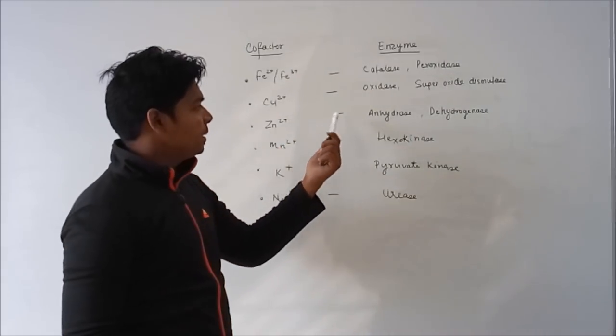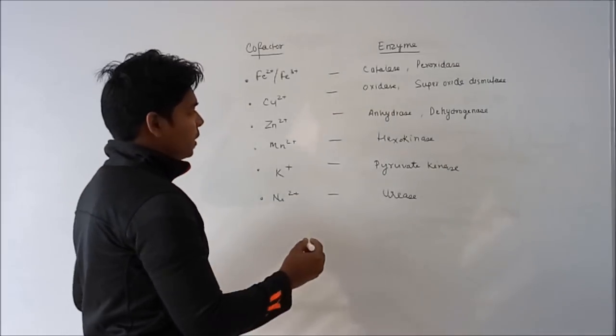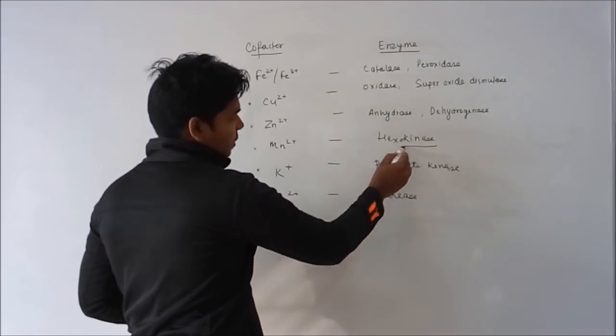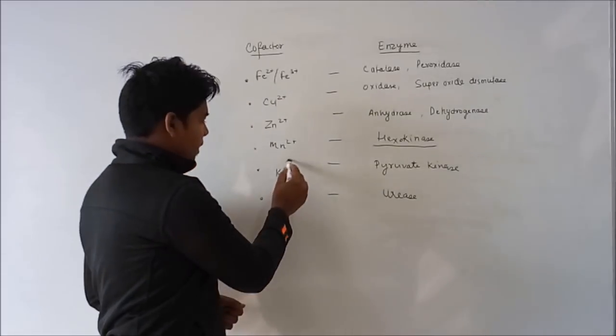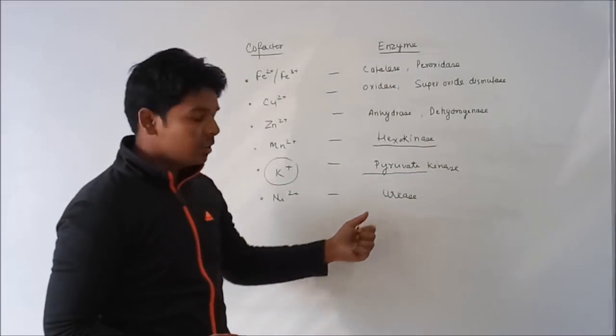The zinc ion is utilized by carbonic anhydrase or dehydrogenase. Magnesium is utilized by the very important enzyme of glycolysis, that is hexokinase. Potassium ion utilized by pyruvate kinase. Nickel ion utilized by urease.